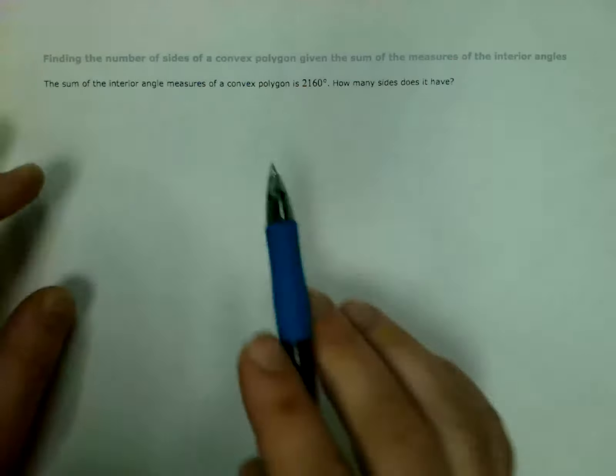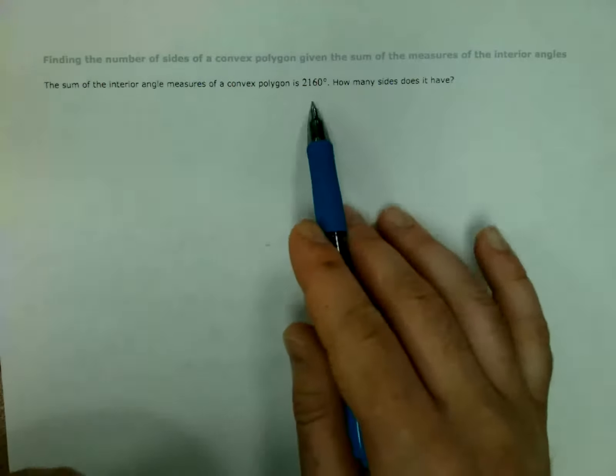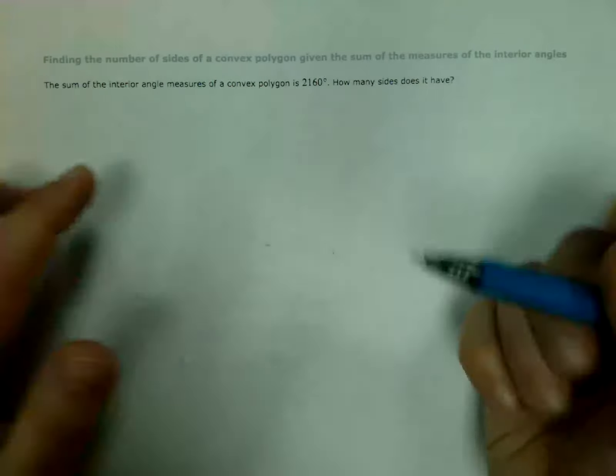So this is kind of opposite of what we looked at before, where we knew how many sides there were and figured out what all the angles would add up to. In this case, we know what all the angles would add up to, and we're going to go backwards and find the sides.